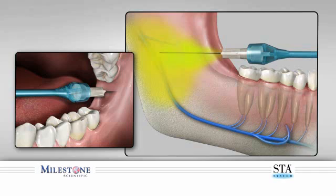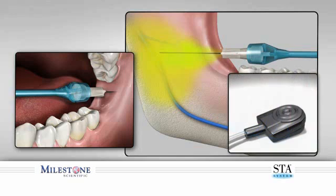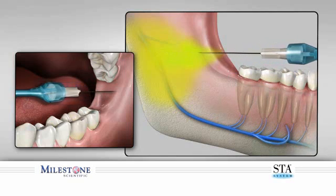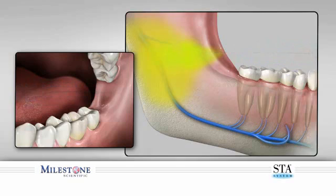To avoid anesthetic solution spray back into the patient's mouth, perform the following: while the needle is still embedded in the patient's tissues, depress and release the foot control pedal. Count three beeps after releasing the foot control, then totally remove the needle from within the patient's mouth. Direct the needle away from the patient, as a small amount of anesthetic solution may still be present.